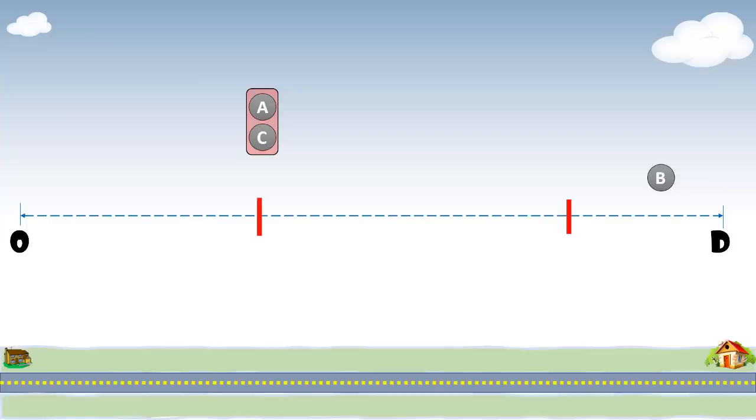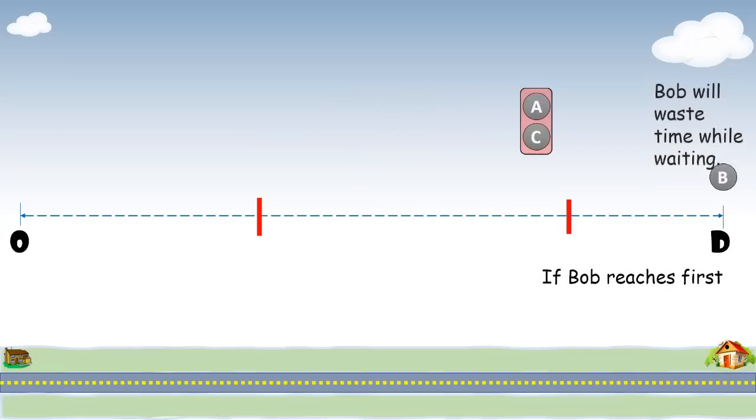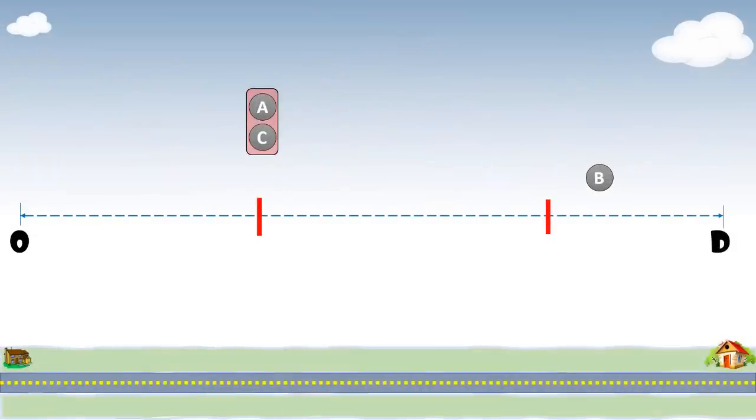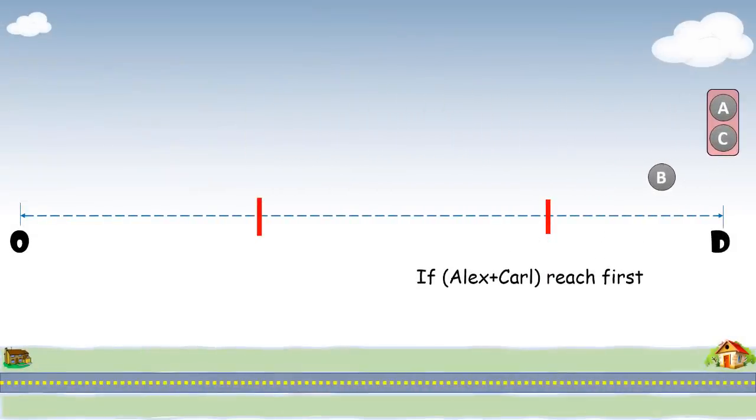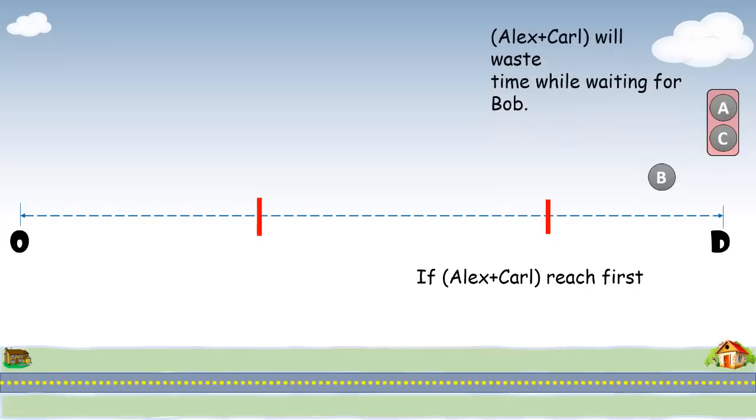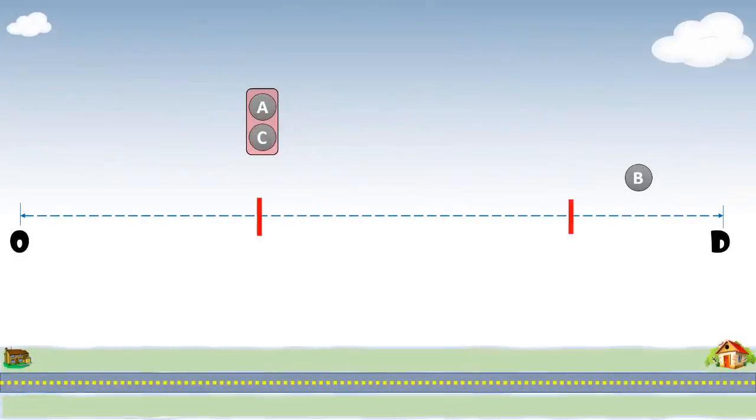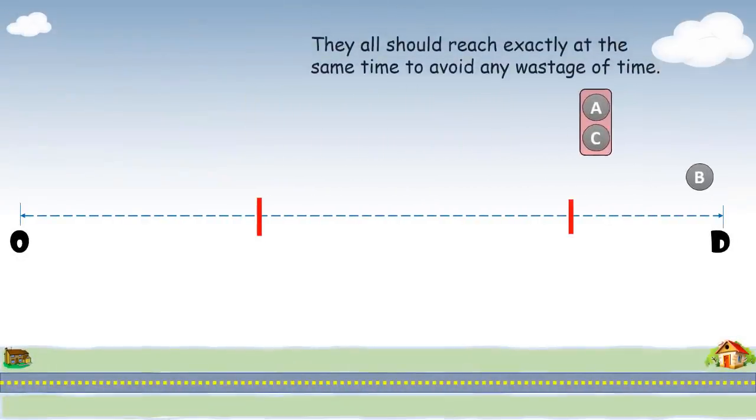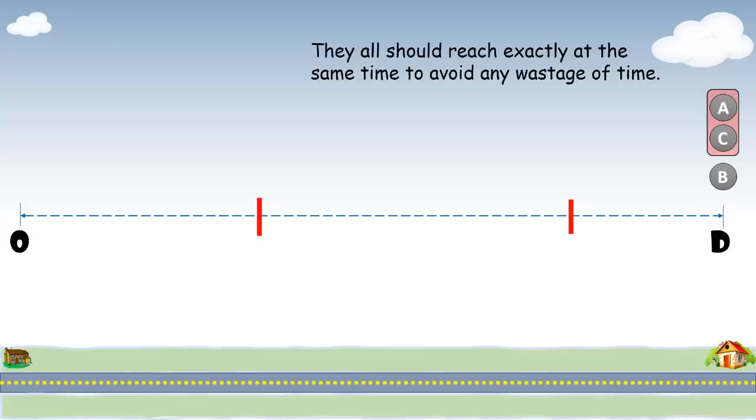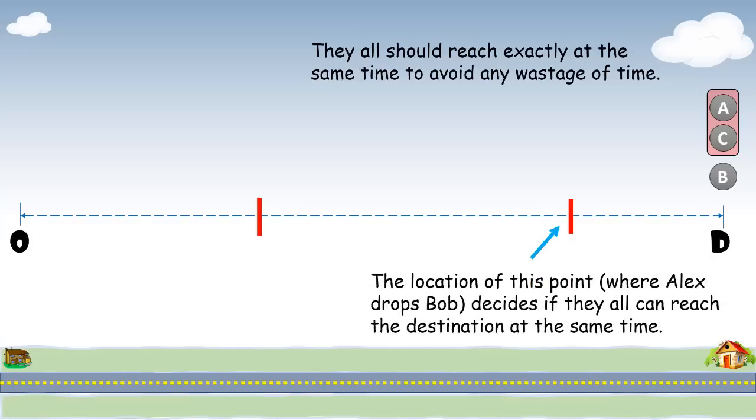And now we have reached the critical part of the solution. Here we have a few scenarios. If Bob reaches the destination first, then he would still waste some time while waiting for other two persons. And if Alex and Karl reach first, then they both will waste some time waiting for Bob. So, the only way the three brothers can avoid any wastage of time is by ensuring that they all reach the destination exactly at the same time. Only then the final time will be minimized. And this perfect timing will be decided by the location of this point where Alex drops Bob.